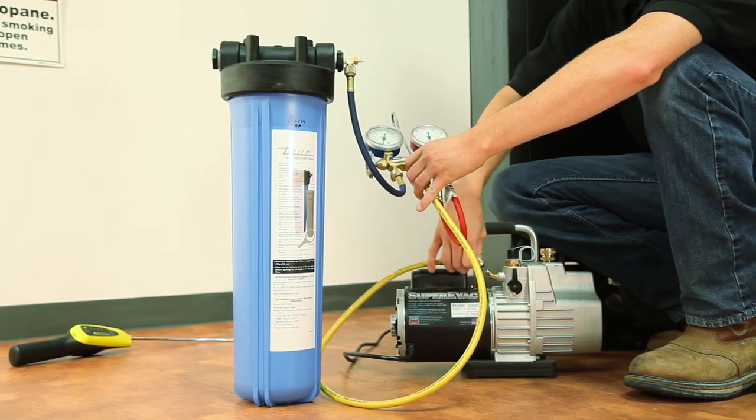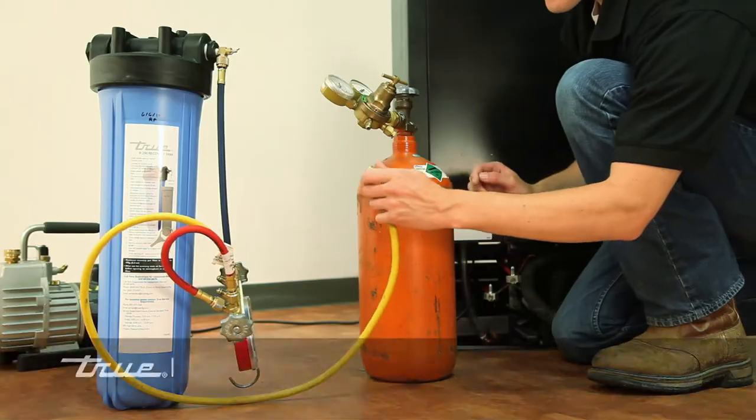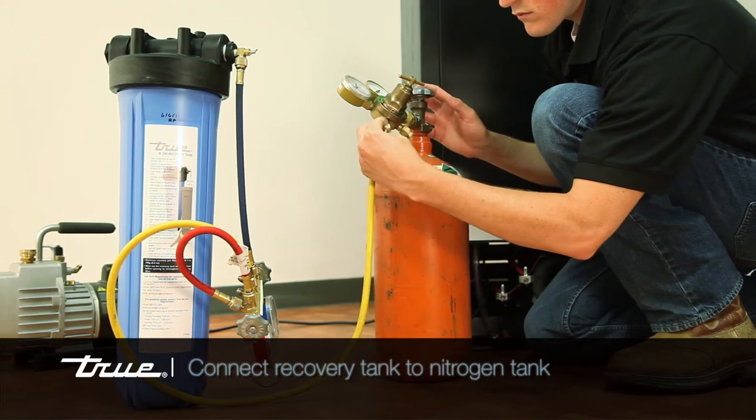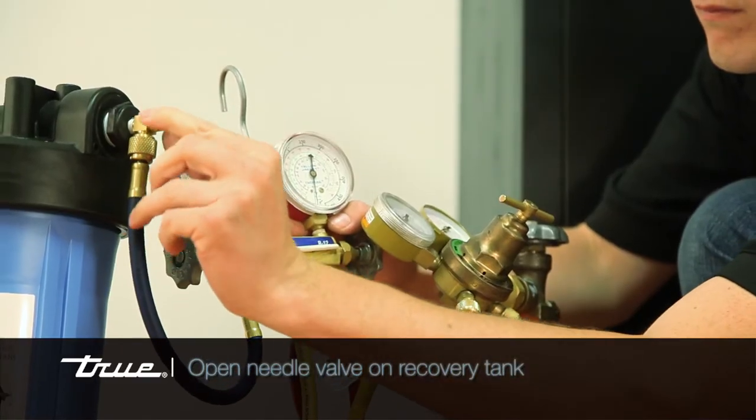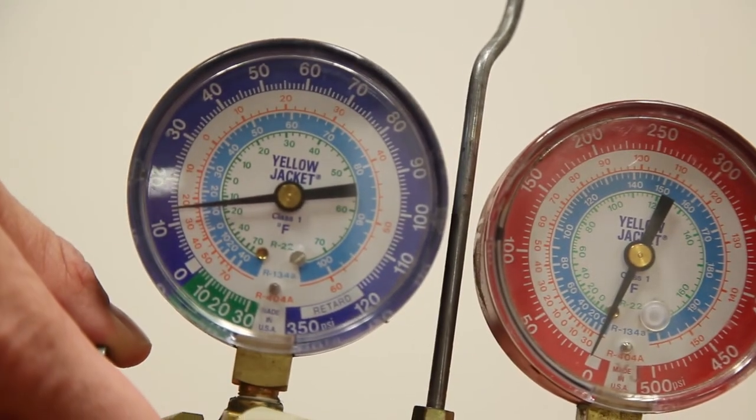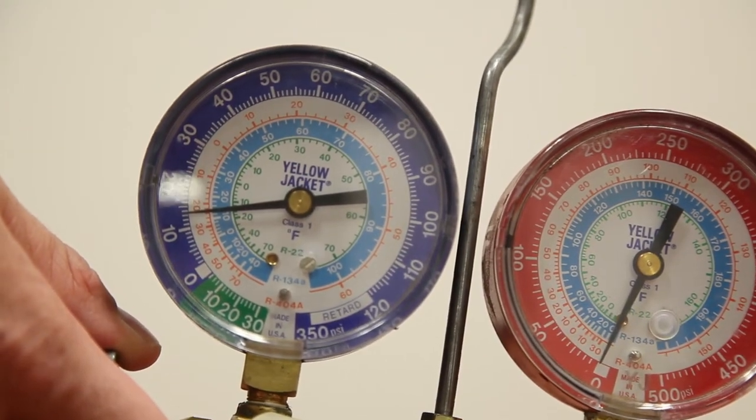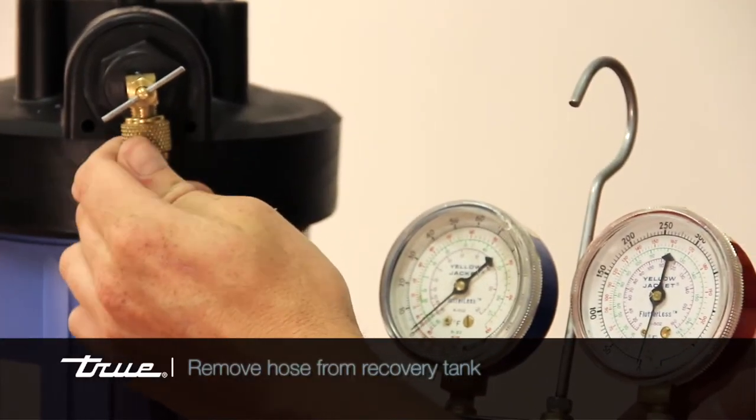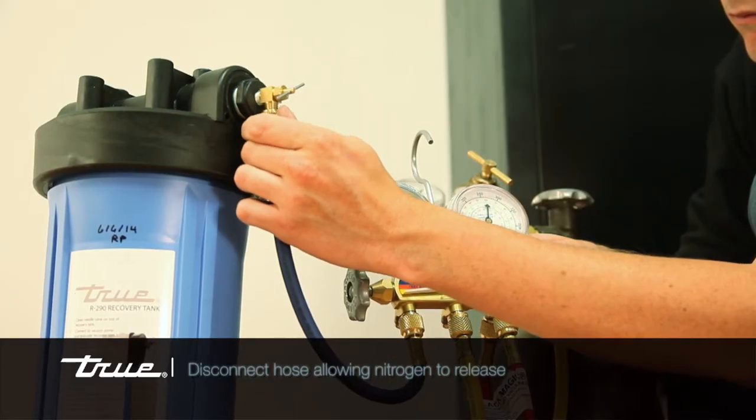Disconnect your gauges from the vacuum pump and connect to your nitrogen tank. Open the needle valve on the recovery tank. You will then break the vacuum in the recovery tank by adding 13 pounds of nitrogen into the tank. The next step is to remove your hose from the tank and release the nitrogen from the tank.